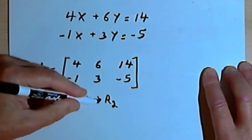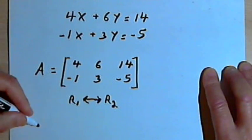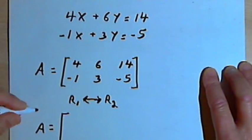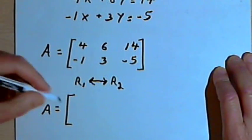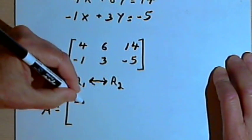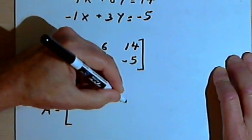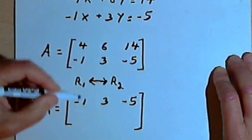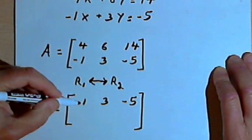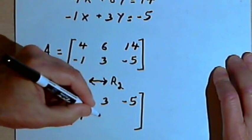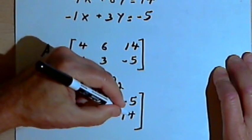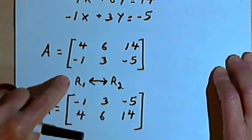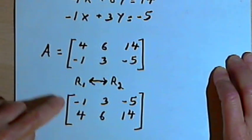Using that notation, I'm going to have a new matrix. The new matrix A is going to be negative 1, 3, negative 5 — that's the old second row, now it's the new first row — and then 4, 6, and 14. So that's just swapping two rows in a matrix.